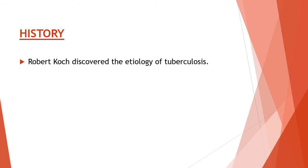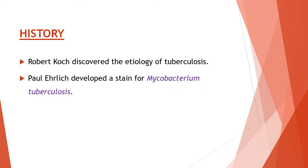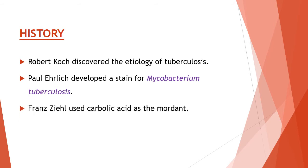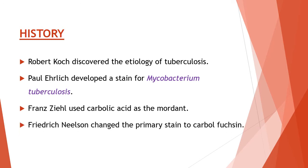In 1882, Robert Koch discovered the etiology of tuberculosis. Soon after Koch's discovery, Ehrlich developed a stain for Mycobacterium tuberculosis called the alum hematoxylin stain. Franz Ziehl then altered this staining technique by using carbolic acid as the mordant. Friedrich Nielsen kept Ziehl's choice of mordant but changed the primary stain to carbolfuchsin. Together, Ziehl and Nielsen's modifications developed the Ziehl-Nielsen stain.